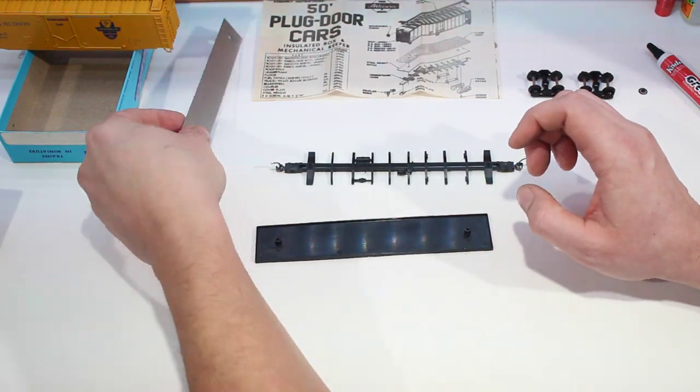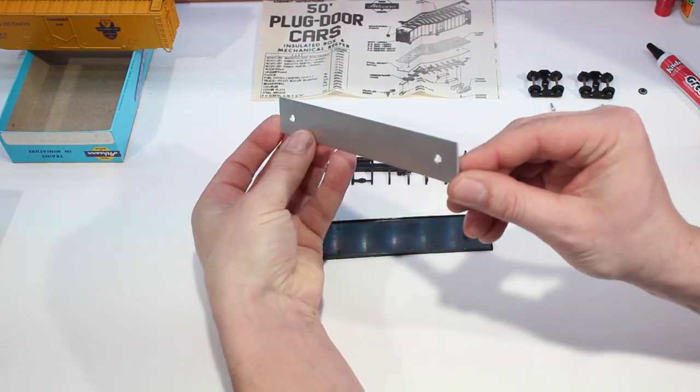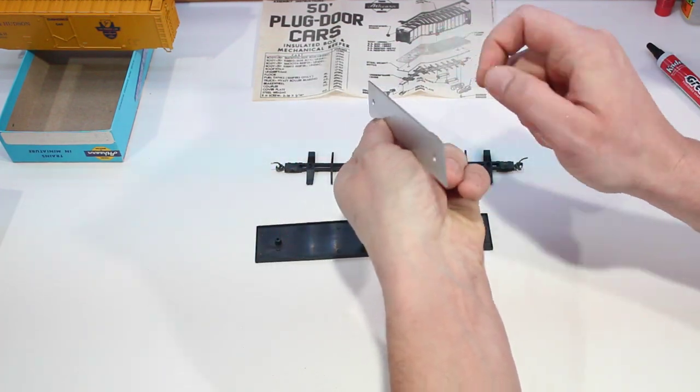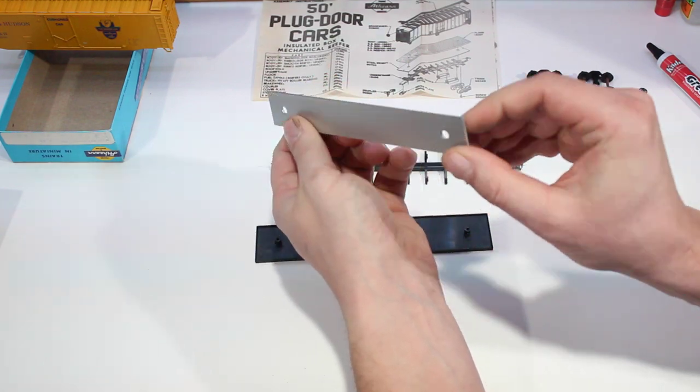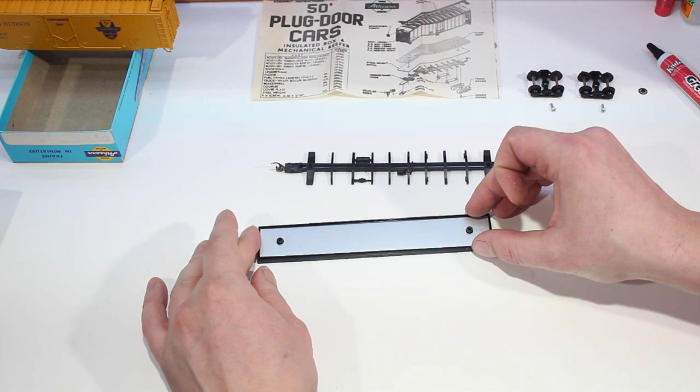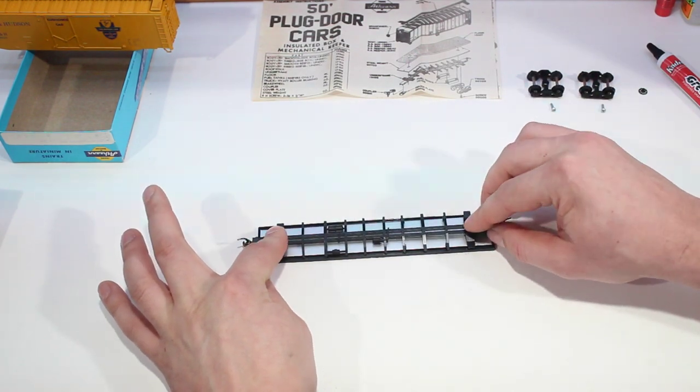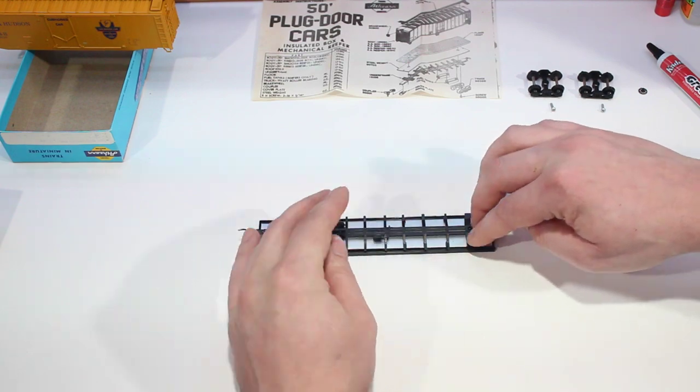Once you've checked for all the flashing, we're going to take our weight. This weight has already been painted. You want to look down the edge of the weight to make sure that it is straight. We're going to sit our weight down on the floor and then put our underframe on top of that, clip it down in there.